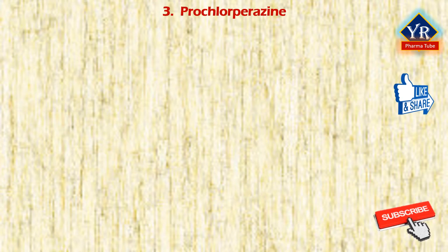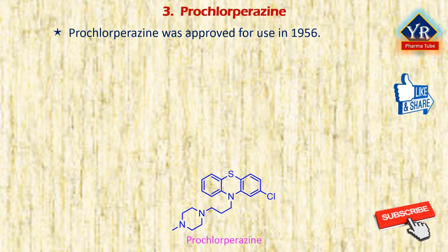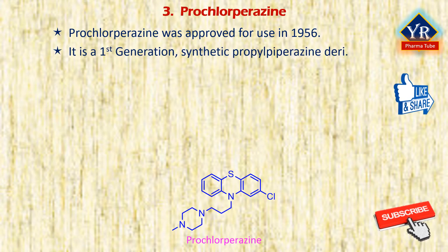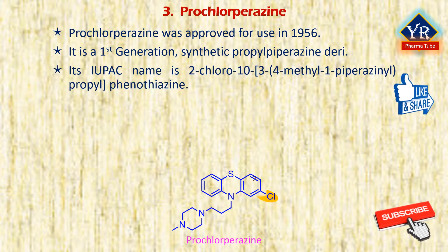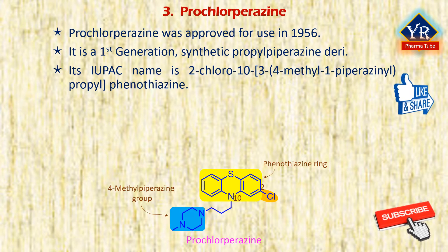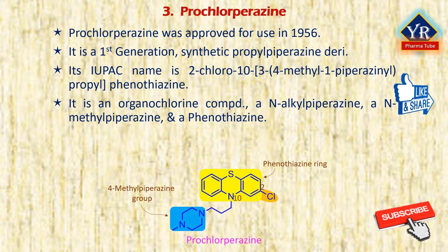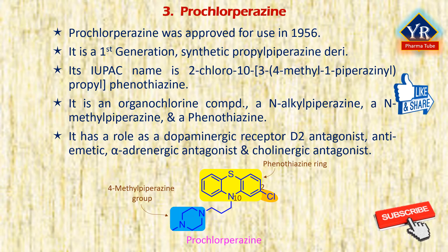The next drug is prochlorperazine, which was approved for medical use in the US in 1956. It is a first generation synthetic propylpiperazine derivative of phenothiazine. Its chemical name is 2-chloro-10-(3-(4-methyl-1-piperazinyl)propyl)phenothiazine. It is a member of phenothiazines having a chloro substituent at the second position and a 3-(4-methyl-1-piperazinyl)propyl group at the N10 position. It is an organochlorine compound, a N-alkylpiperazine, a N-methylpiperazine, and a member of phenothiazines. It has a role as a dopaminergic receptor D2 antagonist, an antiemetic, an alpha-adrenergic antagonist, and a cholinergic antagonist.